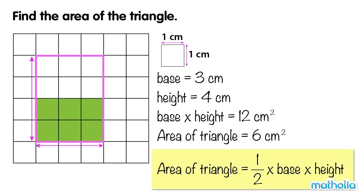The area of a triangle can always be found by half times the base times the height.